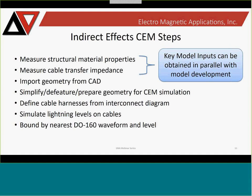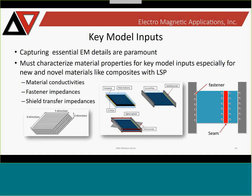You can determine what DO-160 waveform and levels are appropriate for your particular electronics boxes. Key model inputs like material conductivities and transfer impedances are very important for accuracy and can be obtained through measurement. EMA can perform this — we have measured material types input into particular vehicles, quantified conductivities associated with complex composite stacks with or without ECF, and characterized fastener impedances associated with critical joints.